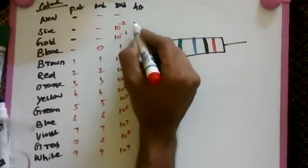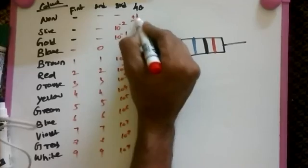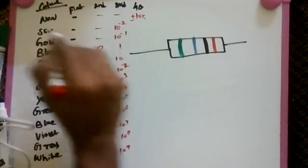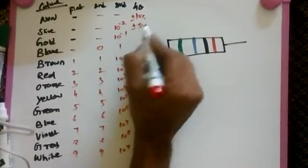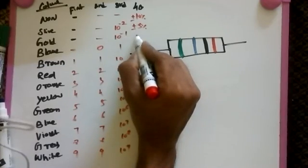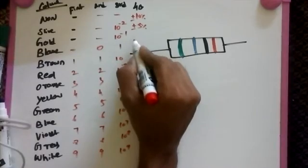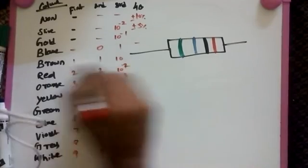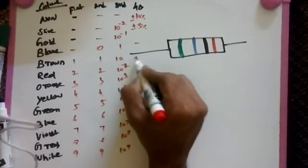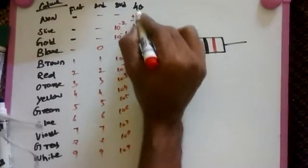In fourth band will occur plus or minus tolerance. Silver is plus or minus 10%, gold is plus or minus 5%, brown plus or minus 1%, red plus or minus 2%, and none is plus or minus 20%.